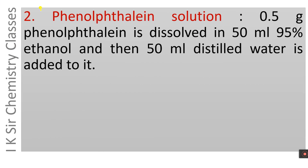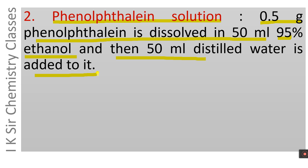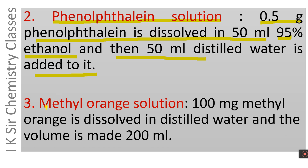Second, phenolphthalein indicator solution: 0.5 g phenolphthalein is dissolved in 50 ml of 95% ethanol and then 50 ml distilled water is added to it, giving the phenolphthalein indicator solution. Third, methyl orange indicator: 100 mg of methyl orange is dissolved in distilled water and the volume is made 200 ml to get the methyl orange indicator solution.